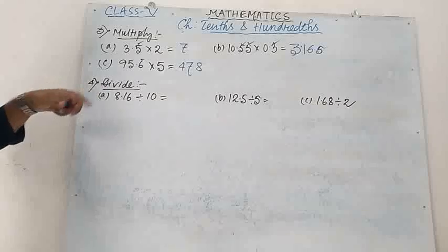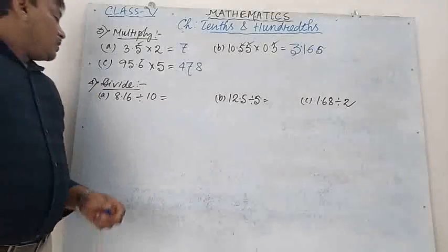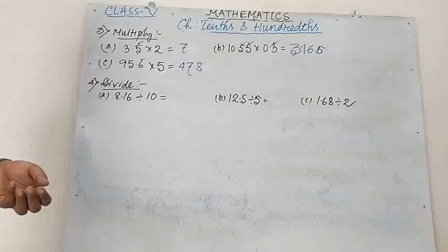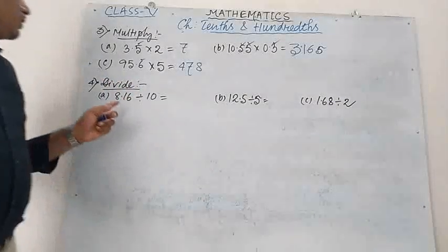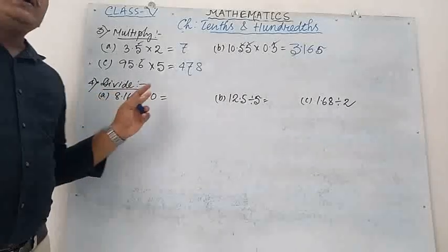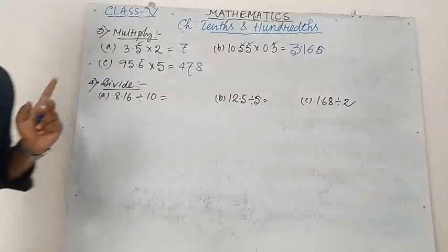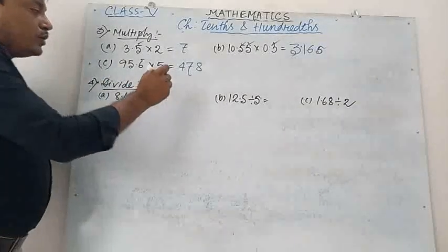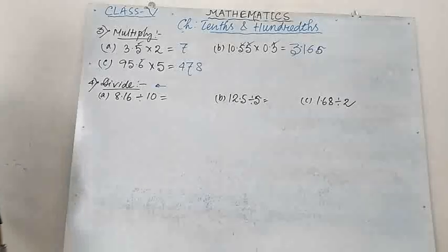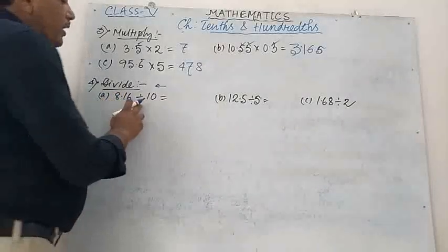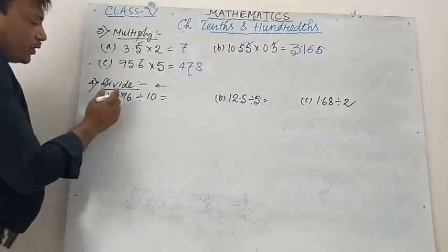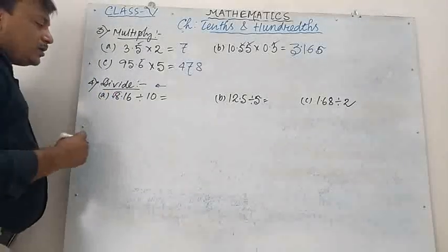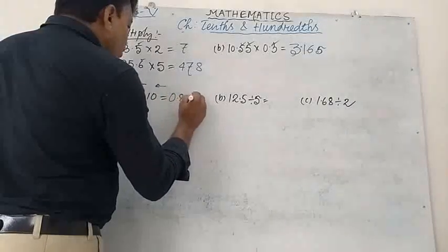You can write 478.0 or you can write 478 — both will be correct. Next, division. Number A: 8.16 divided by 10. When we are dividing by 10, the point will shift 1 digit from its current position to the left. So the point will be before 8, and the answer will be 0.816.